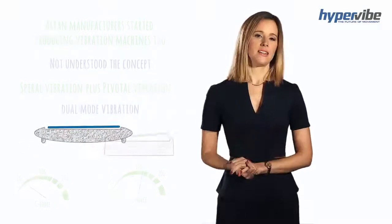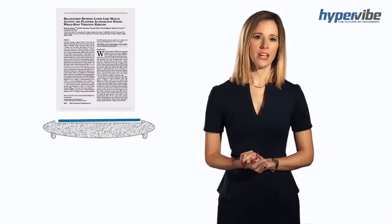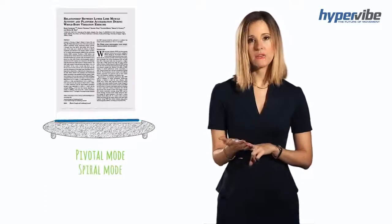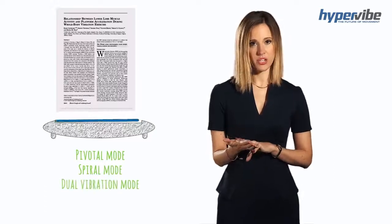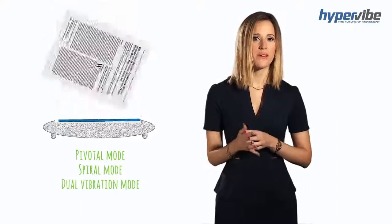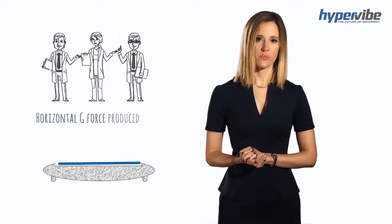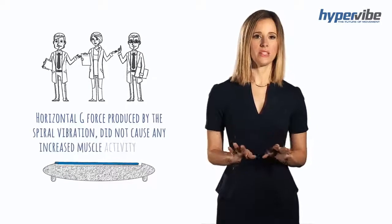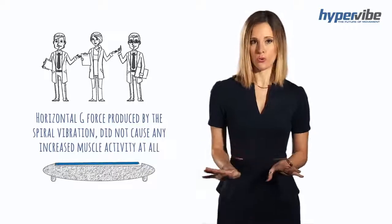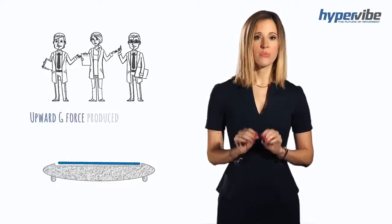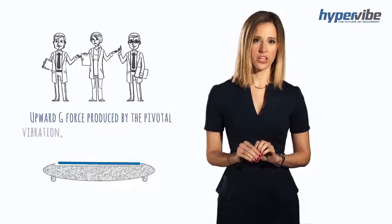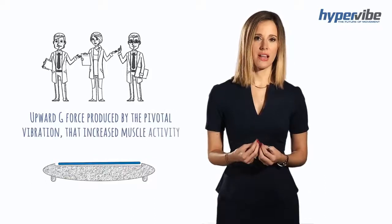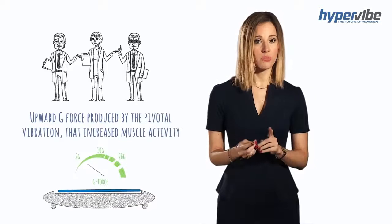In a Canadian study, scientists took a machine that had three different vibration modes: pivotal mode, spiral mode and dual-vibration mode with pivotal and spiral vibration together. The scientists found that the horizontal g-force produced by the spiral vibration did not cause any increased muscle activity at all. And it was only the upward g-force produced by the pivotal vibration that increased muscle activity, but only when it was more than two g's.